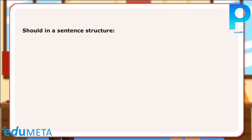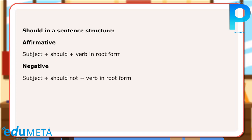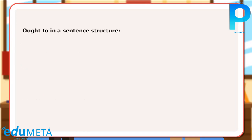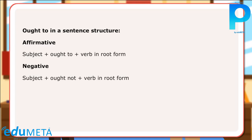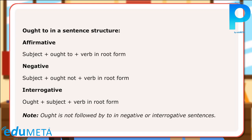Should in a sentence structure: Affirmative — Subject + should + verb in root form. Negative — Subject + should not + verb in root form. Interrogative — Should + subject + verb in root form. Ought to in a sentence structure: Affirmative — Subject + ought to + verb in root form. Negative — Subject + ought not + verb in root form. Interrogative — Ought + subject + verb in root form. Note: Ought to is not followed by 'to' in negative or interrogative sentences.